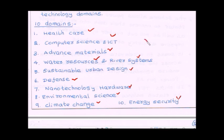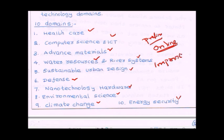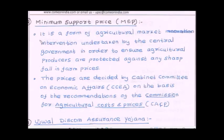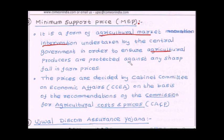Join our prelims and mains target IAS 2016 online video lectures to get more updates and explanation on the Imprint India topic. The next topic that we will see is minimum support price. Minimum support price is a form of agricultural market intervention taken by the central government to ensure that farmers or agricultural producers are protected against any sharp fall in farm prices.